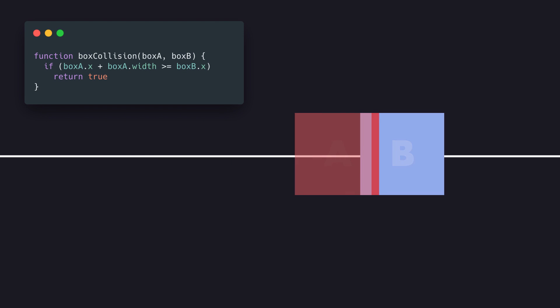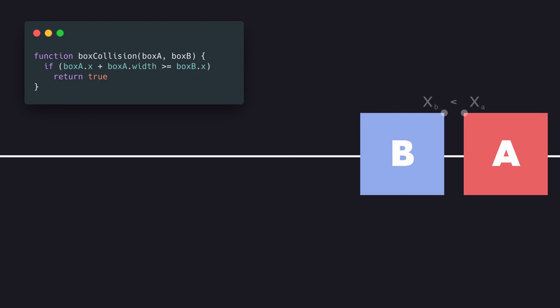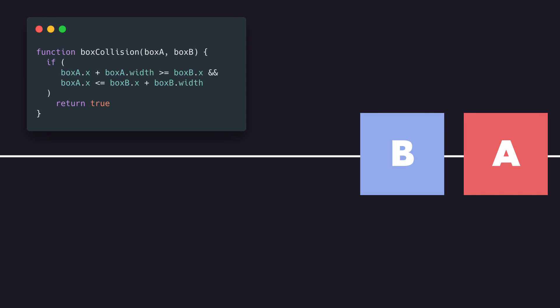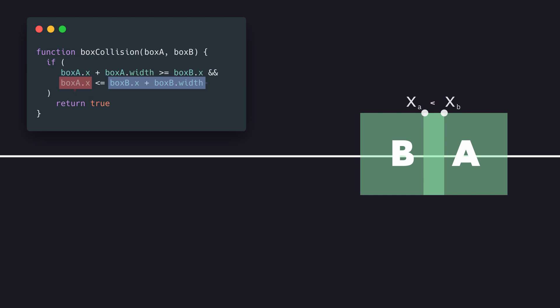We must determine whether or not these two rectangles overlap on the x-axis. If the right side of rectangle A is greater than or equal to the x position of rectangle B, we can start to say these two rectangles do indeed overlap. However, if the x position of rectangle A is greater than the right side of rectangle B, the two are no longer overlapping. Therefore, if the x position of A is less than or equal to the x position of B plus its width, then the two are colliding. So if the left side of A is less than the right side of B, they are overlapping — and that's all we need for collision detection on the x-axis.